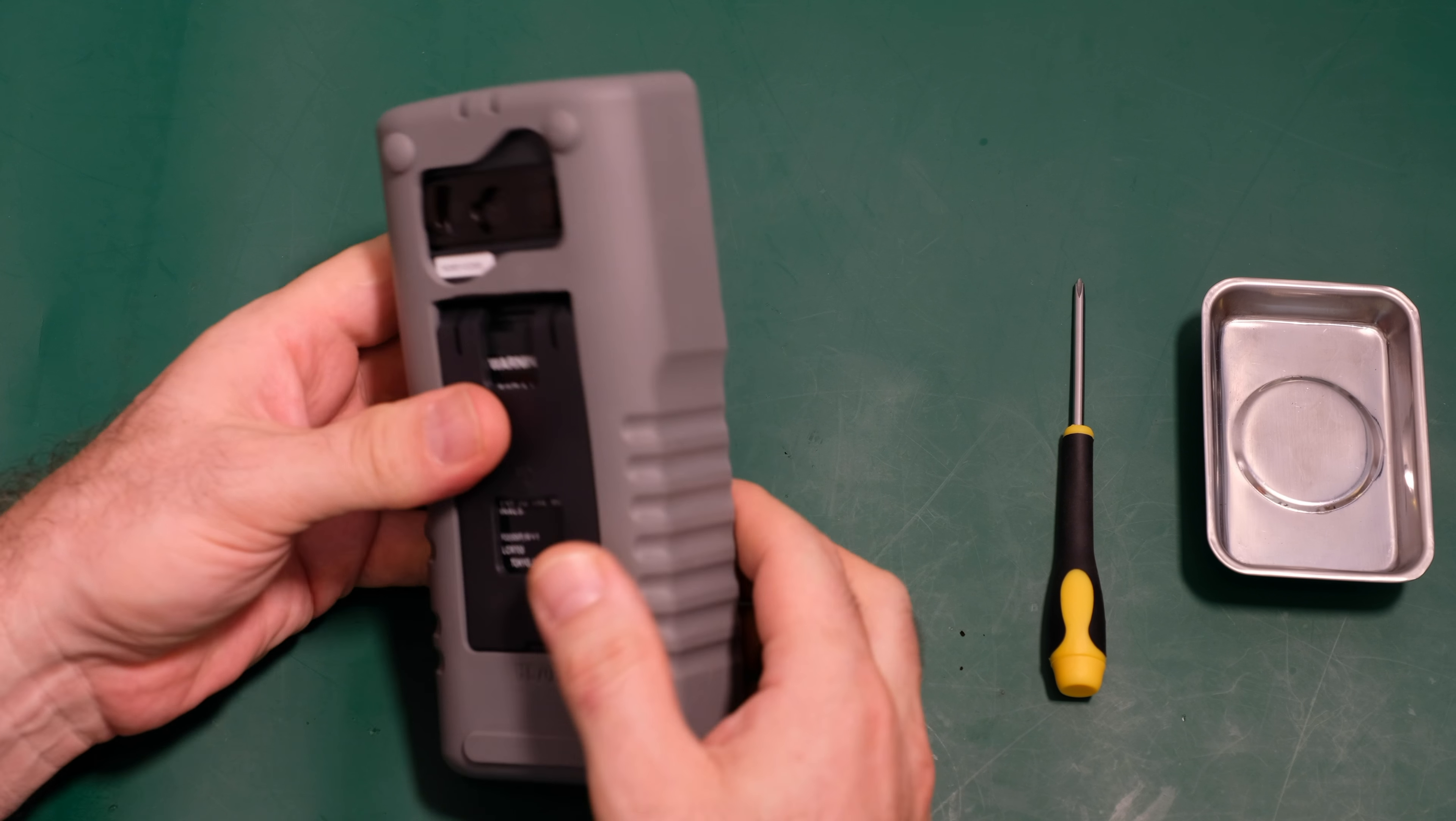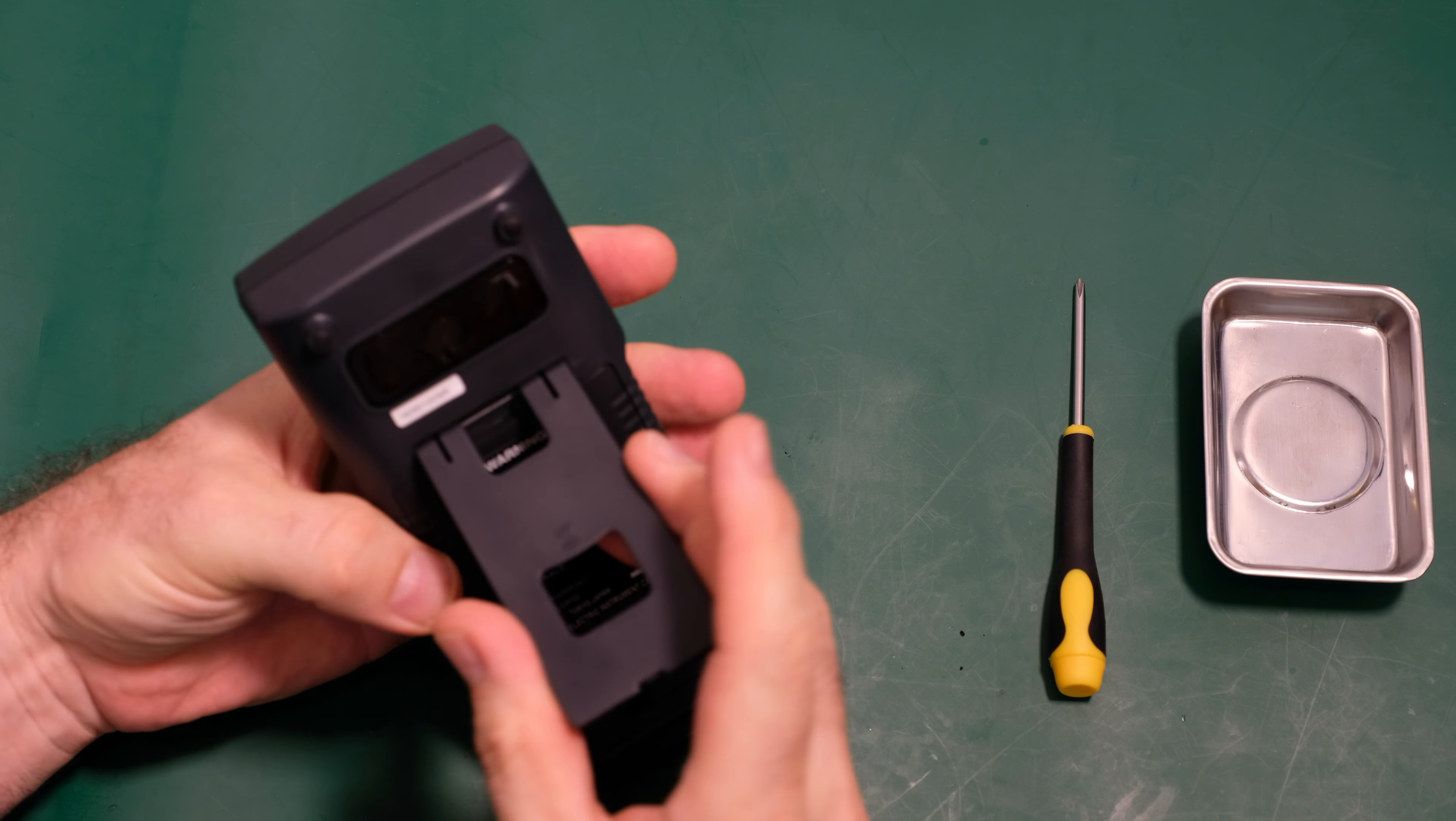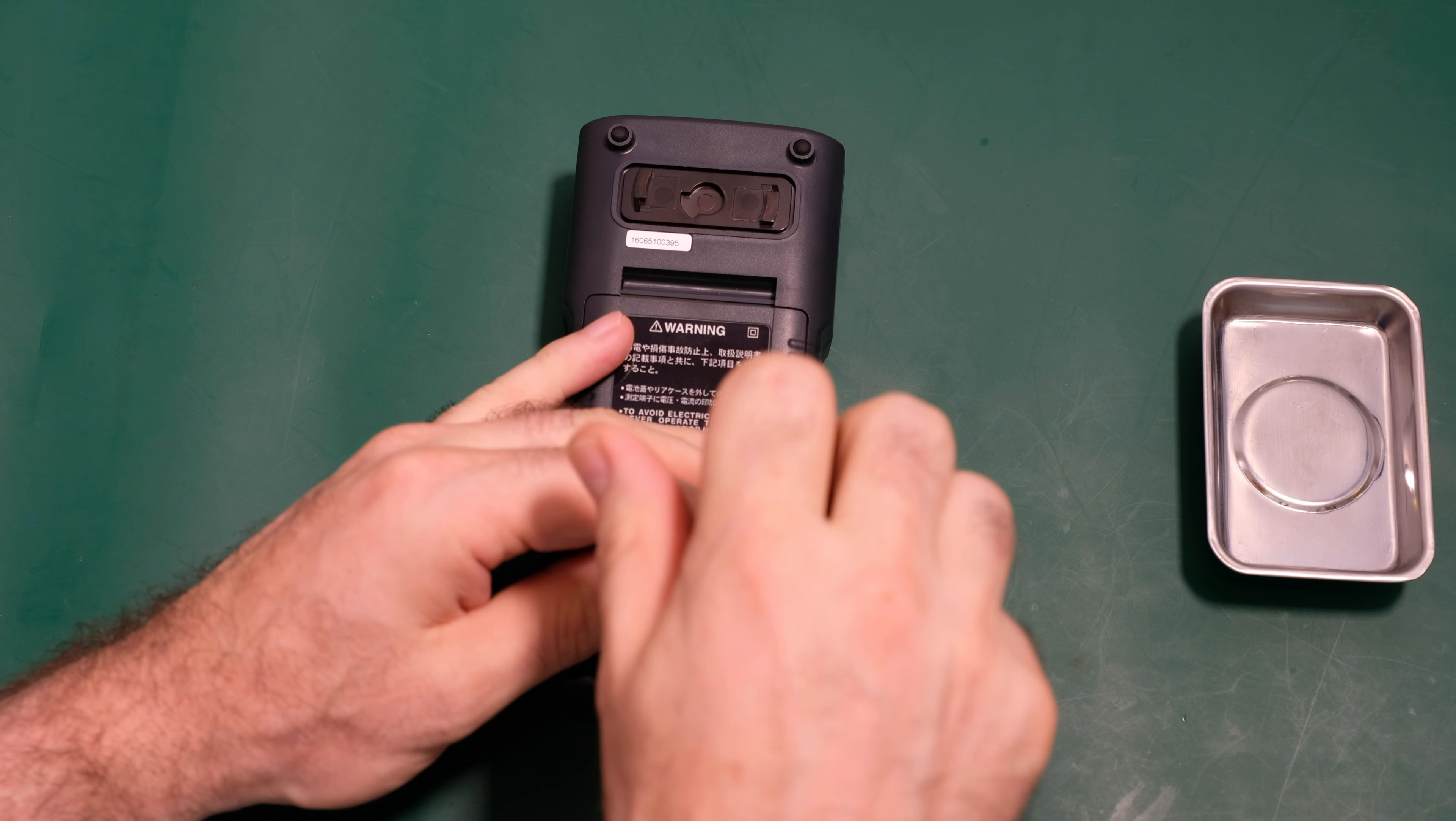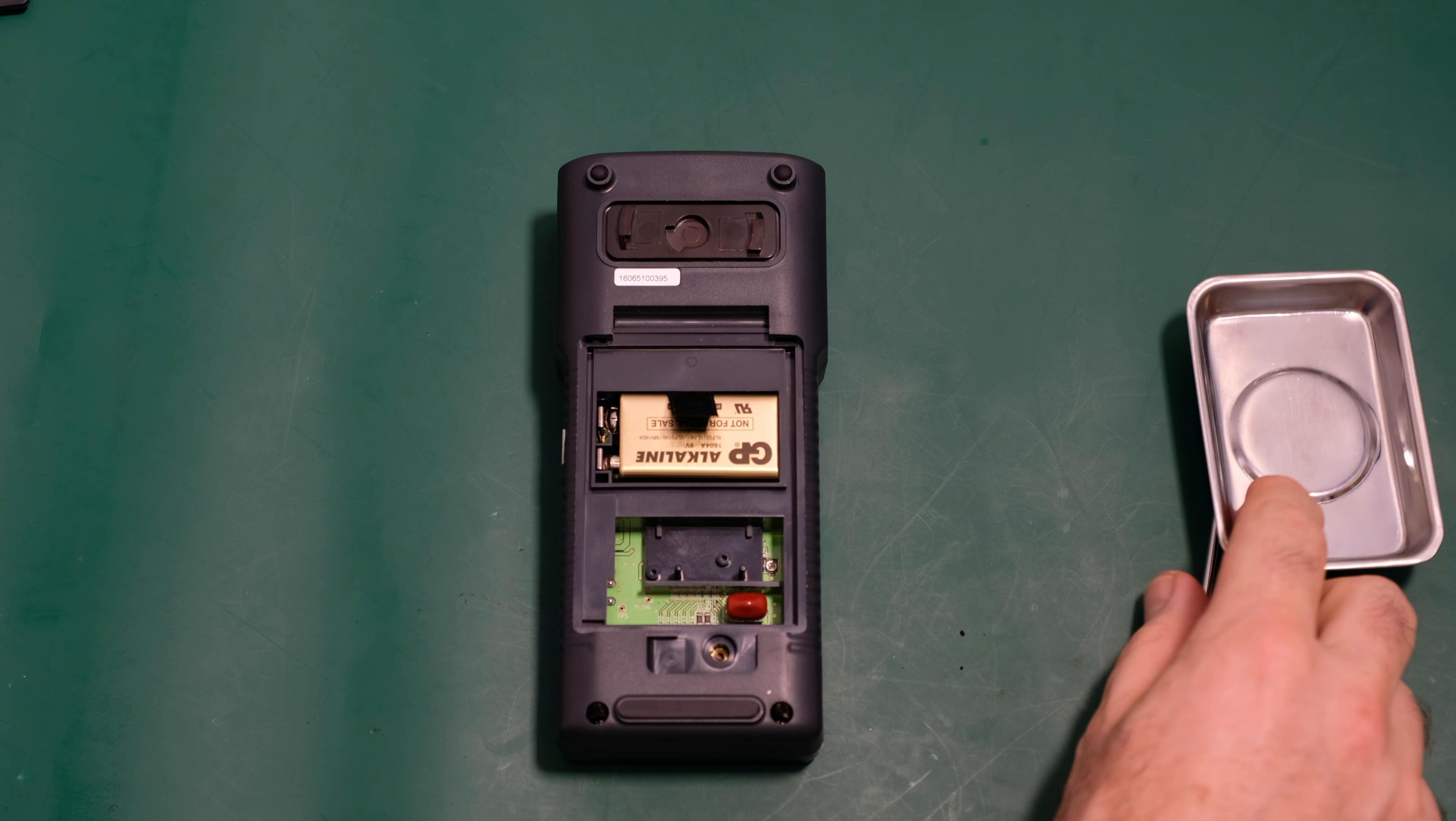Okay, let's get going. So there's a nice rubber holster, let's get rid of that. Tilted bail, easily removed. Battery compartment - so it just takes a 9-volt battery.